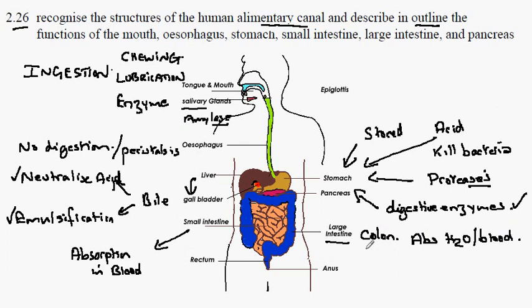Finally, the undigested components of our diet are stored in the rectum and then released to the outside through the anus.